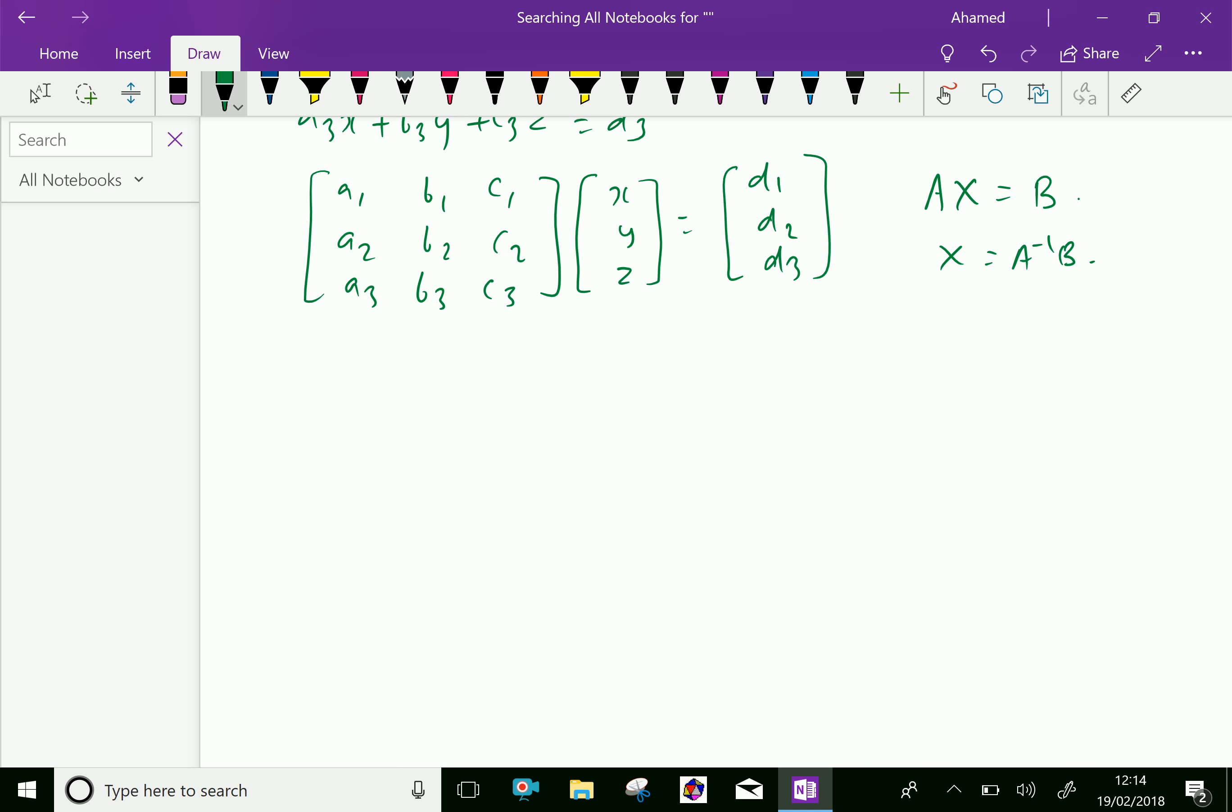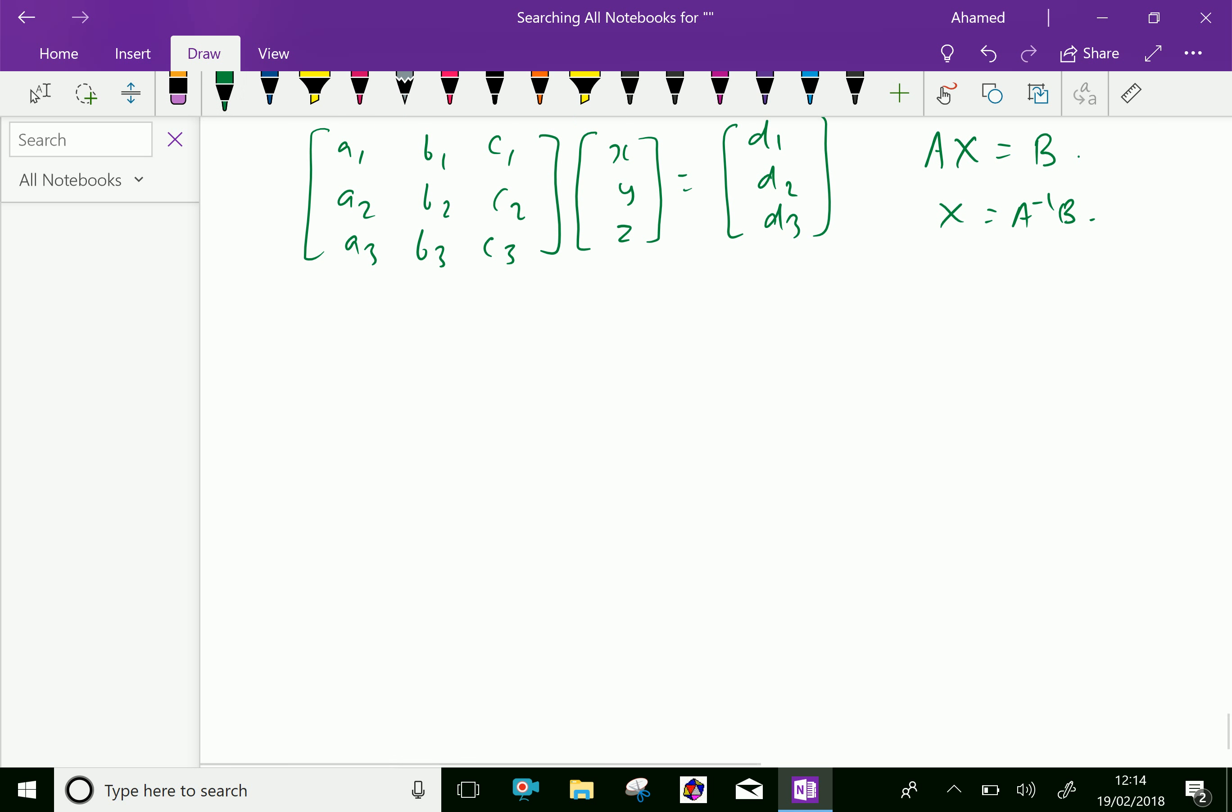Now, the system of equations, we can check the consistency. Consistency check. Here, the procedure: write the system of equation in terms of Ax equals B. We are doing some algorithm.